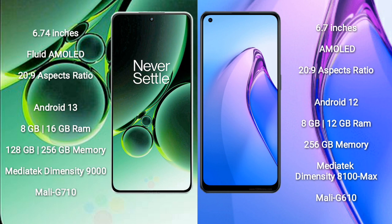OnePlus Nord 3 comes with 8GB or 16GB RAM and 128GB or 256GB internal storage, with a MediaTek Dimensity 9000 processor and Mali-G710 GPU.